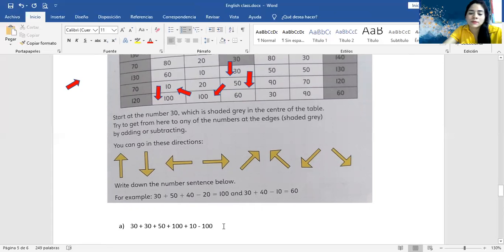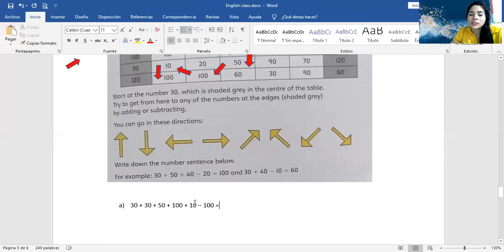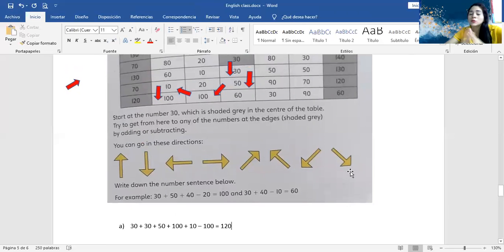So let's see. Let's see. Guys, let's see. 30 plus 30, 60. 60 plus 50, 110. 210. 210 plus 10. 220. 220 minus 100 equals 120. Very good. Here, 120. Guys, you have to do it with a paper.